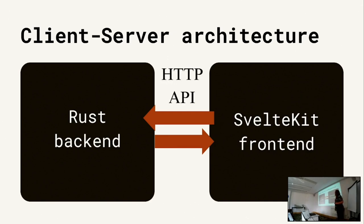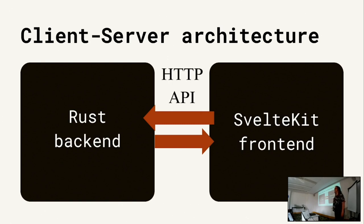For contrast, the first iteration of this project was written in Django, so it was a monolithic web application with traditional server-rendered pages. But this time I was going for the client-server architecture that had become modern in recent years and a de facto industry standard. So you have a Rust backend and a frontend implemented in SvelteKit, and both communicate via an HTTP API - the SvelteKit frontend makes requests to the backend and the backend responds via HTTP.